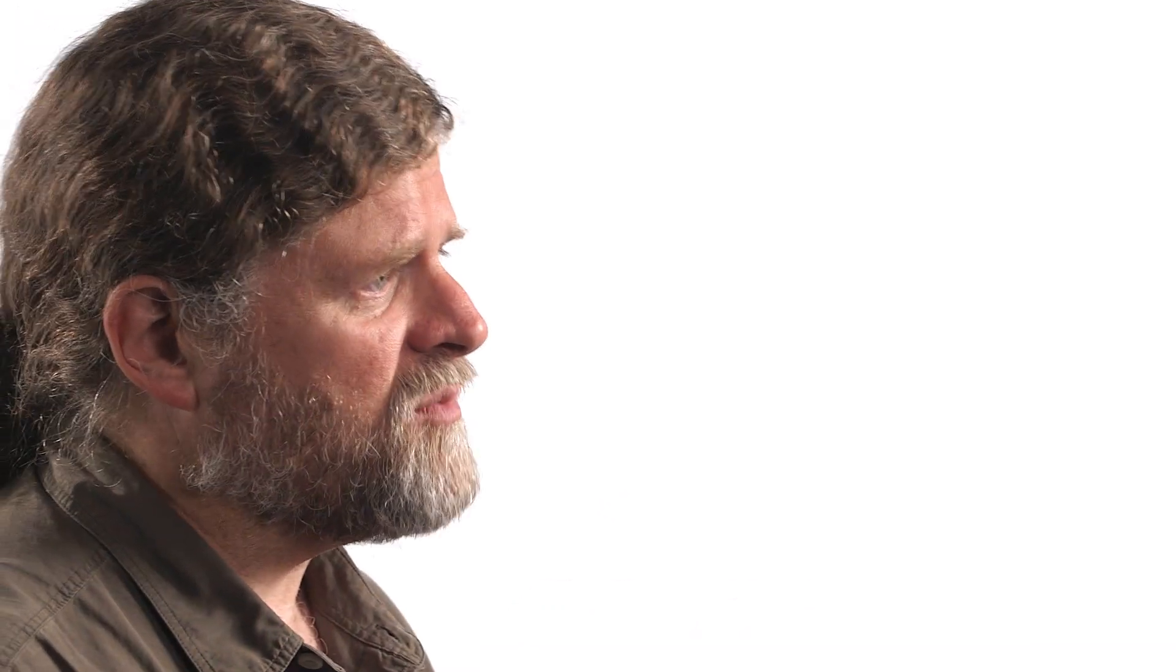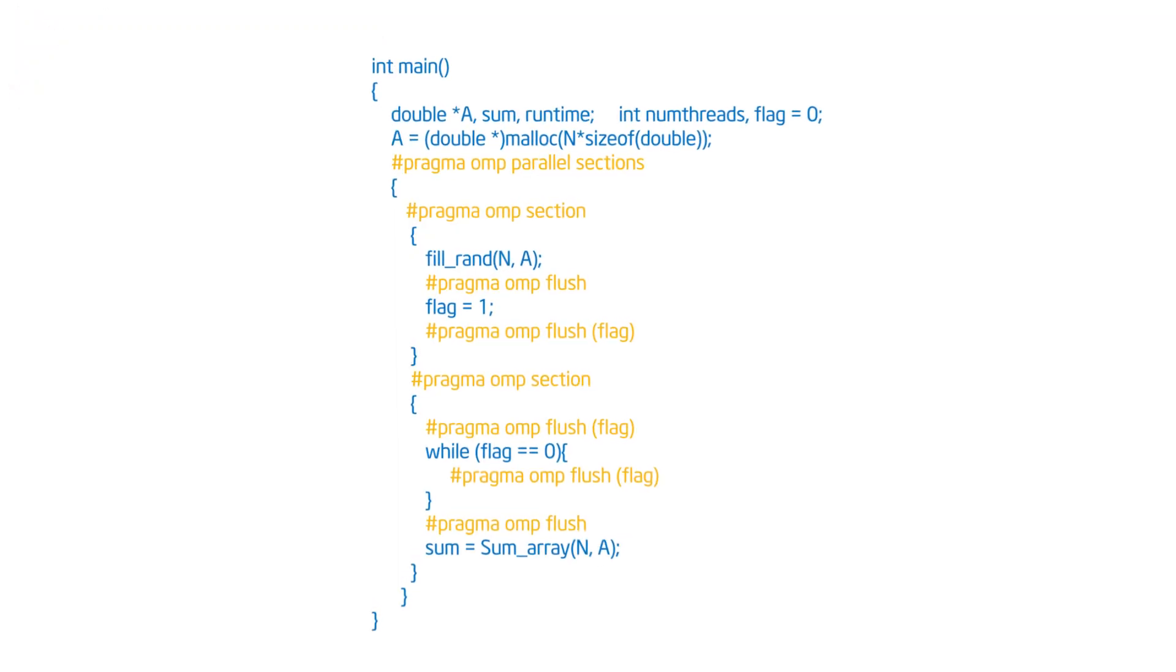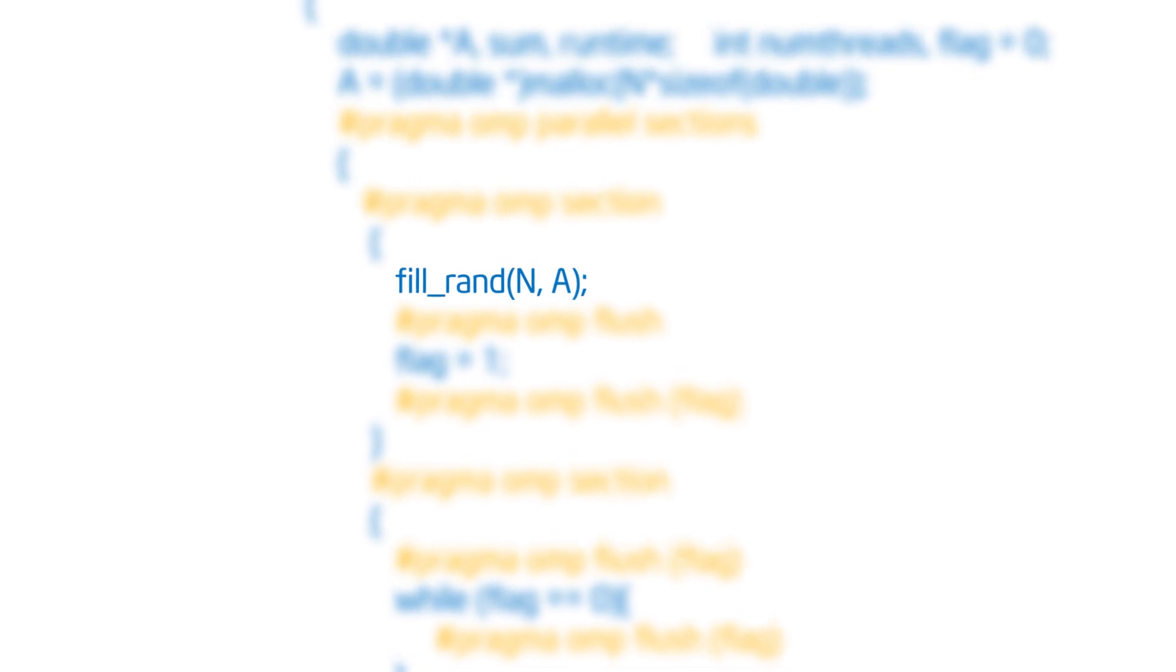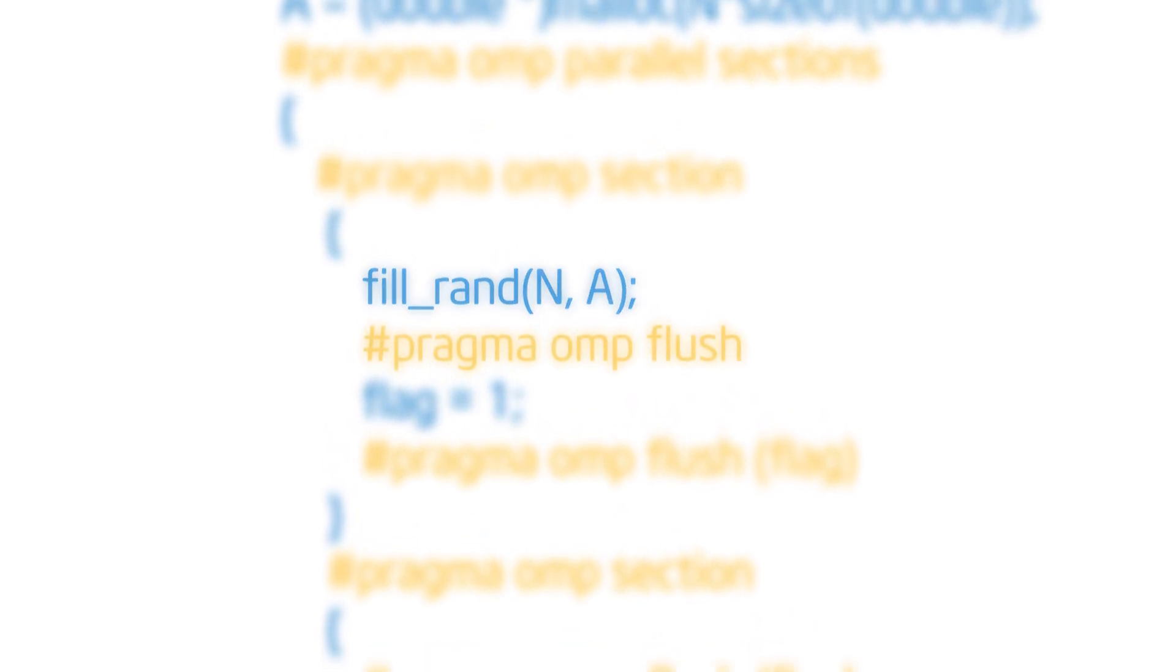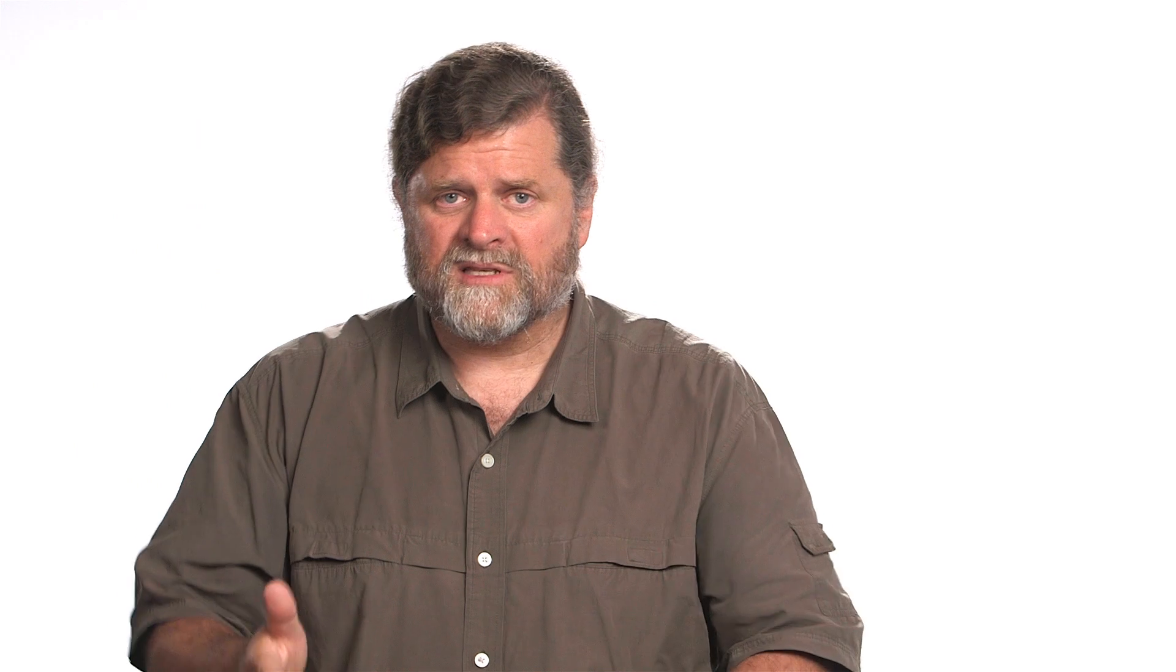It's easiest if we start with the producer than go to the consumer. So the producer is that first one, and it's going to call fill_rand, and then when it's done, I'm going to flush, because I want to make the value of the array I just created visible to other threads. So that's why after I'm done with fill_rand, I have a pragma omp flush. And that's my way of saying, I've created this array A. I want anyone who wants to see it to be able to see it.